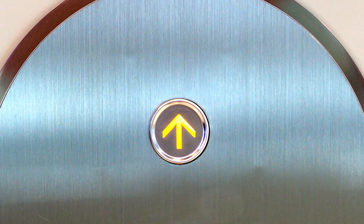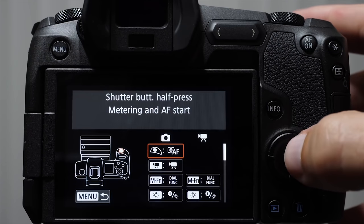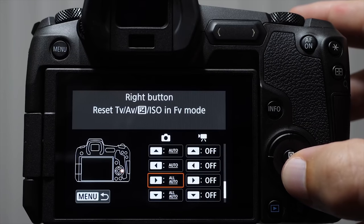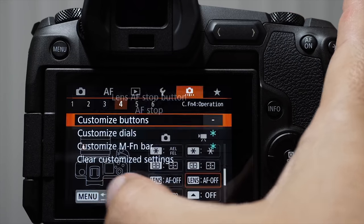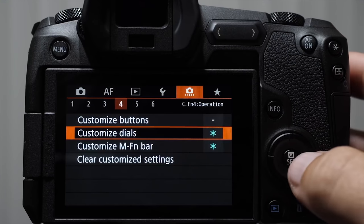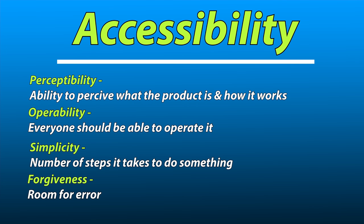The simplicity really has to do with how easy it is to get in there and make these changes. The elevator example — you push one button, everything's automated after that. Many commenters on that EOS R usability video were talking about, well, just customize it. But if a user needs to go in to customize something in order to get it to work correctly, that straight up conflicts with the simplicity cause. Finally, we have something called forgiveness, which means that if you bump something or you accidentally do something, it's not going to be the end of the world. You can find examples where Canon fell short on every single one of those — perceptibility, operability, simplicity, and forgiveness — with the EOS R.